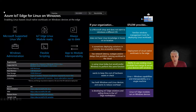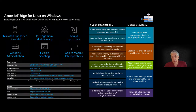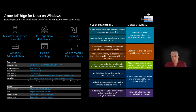Azure IoT Edge for Linux on Windows enables Linux-based cloud workloads or Azure IoT Edge workloads to run on Windows in a virtual Linux environment. It's a hybrid platform. We provide a Microsoft-supported, curated Linux virtual machine. We build Azure IoT Edge into that virtual machine, validate it as a set, and then deploy it on the Windows device under hypervisor. One of the things unique about this is we manage it as a Windows feature as opposed to a Linux feature.